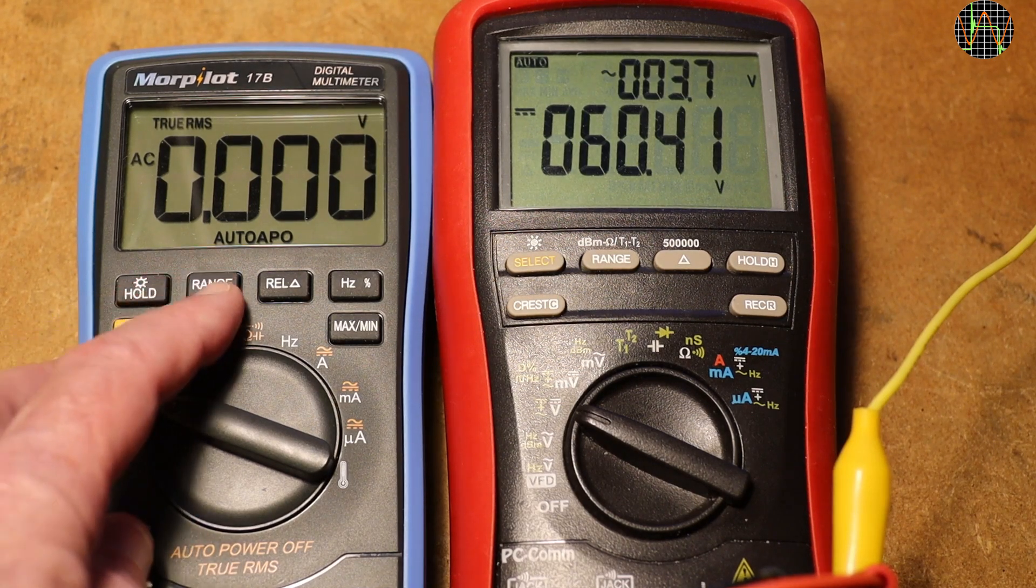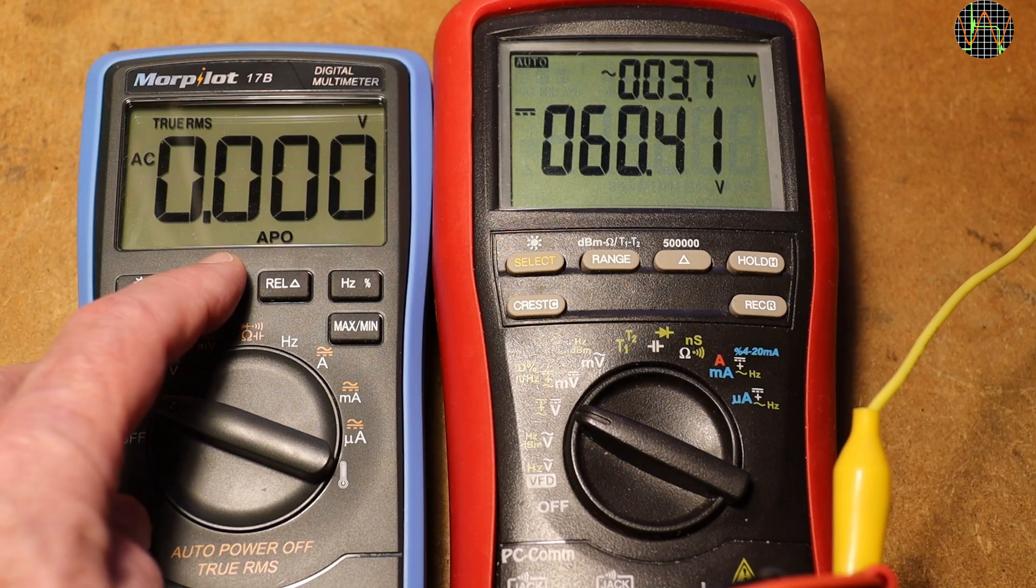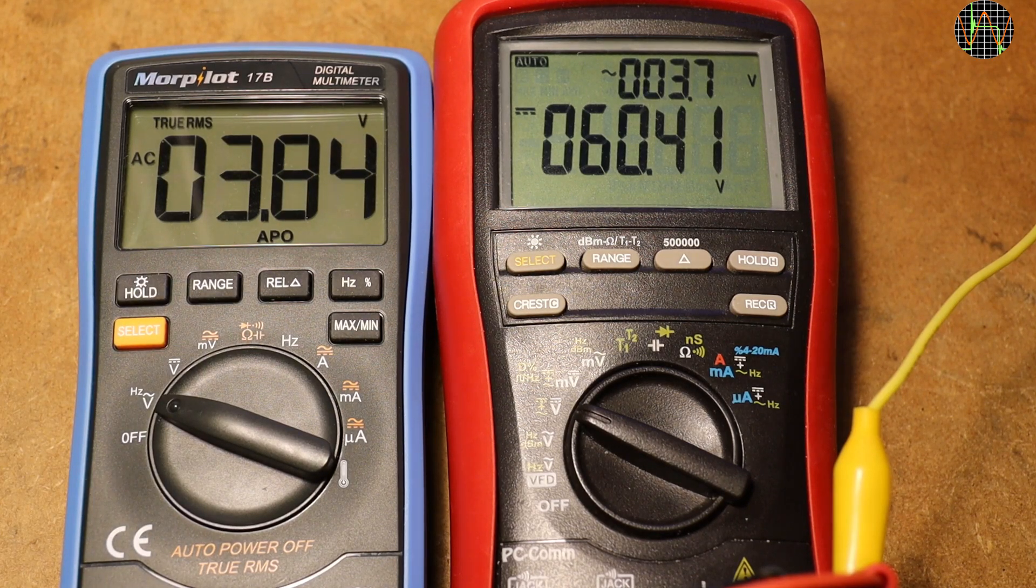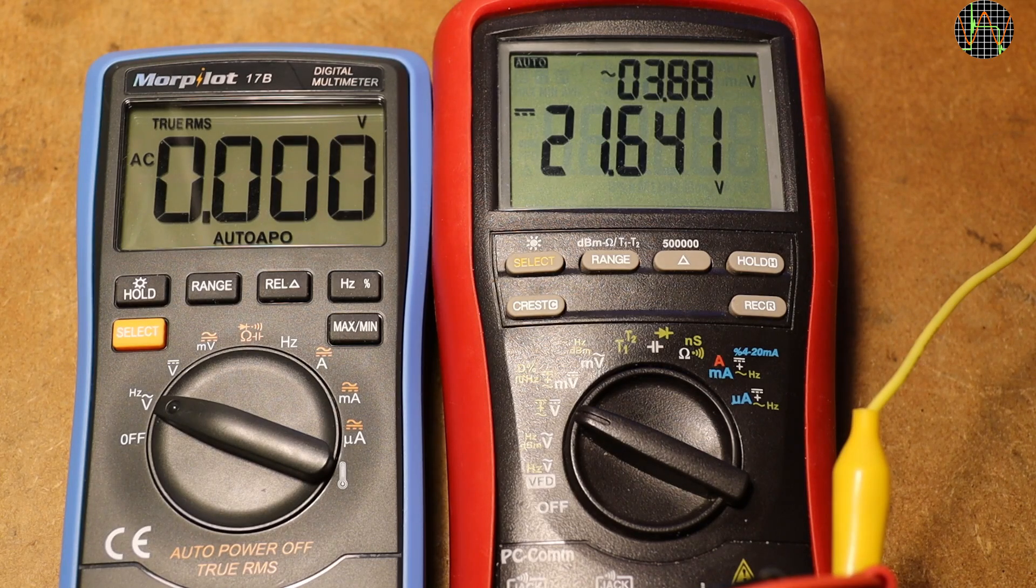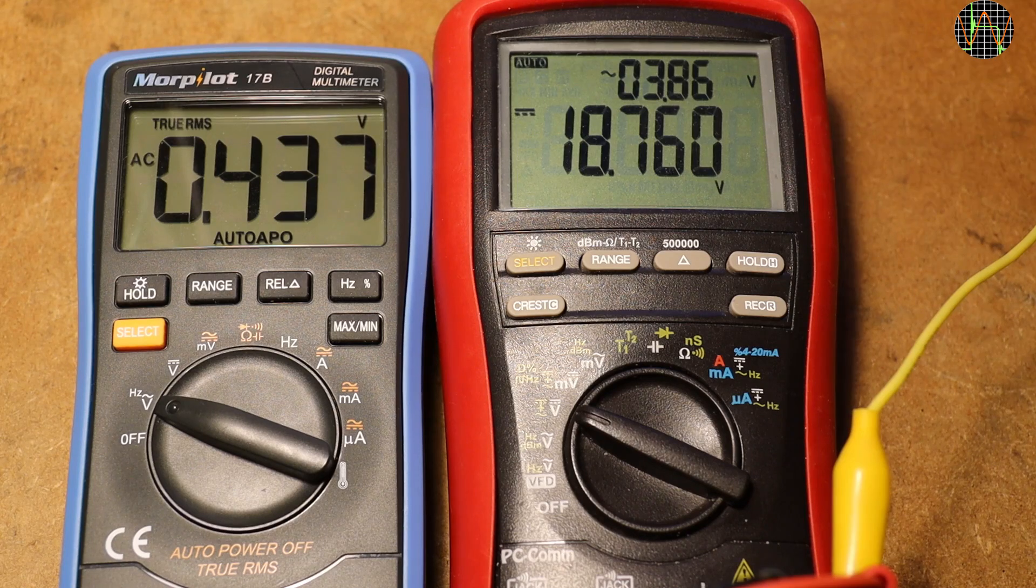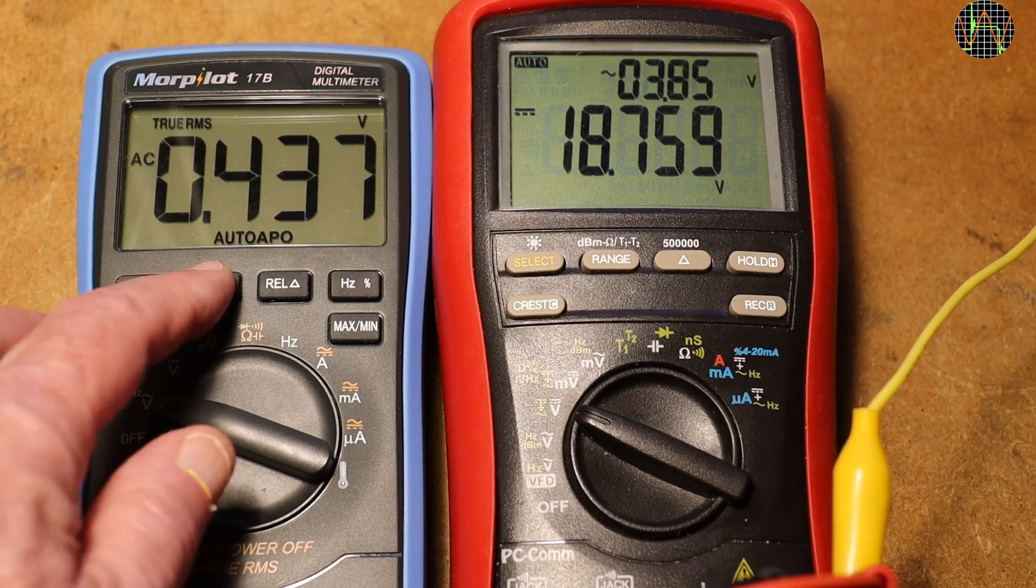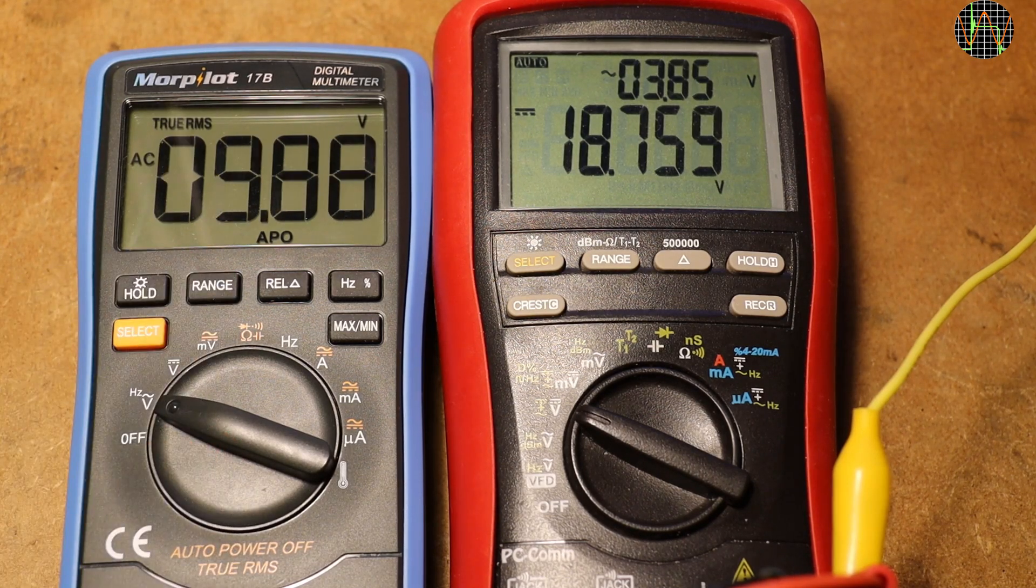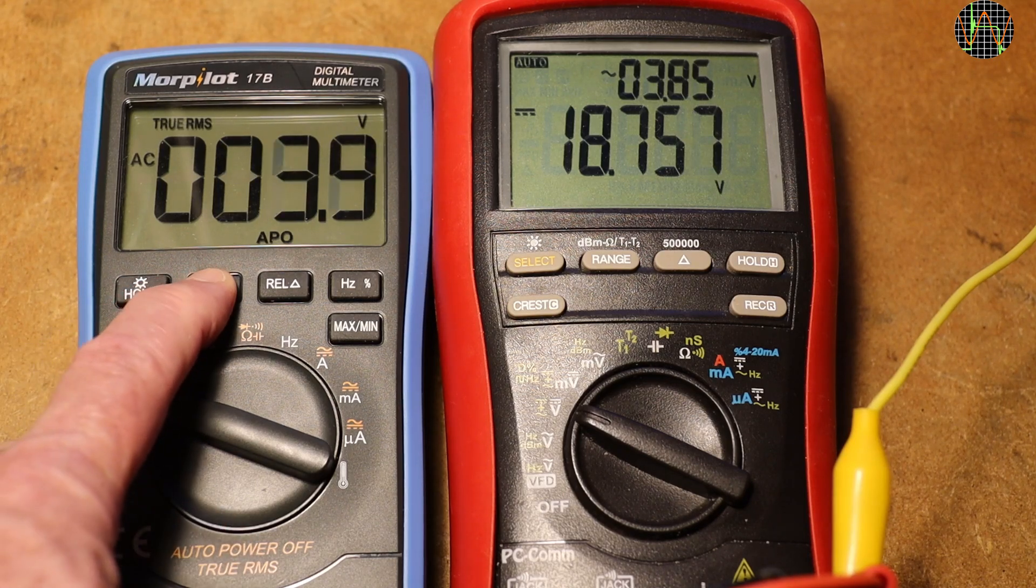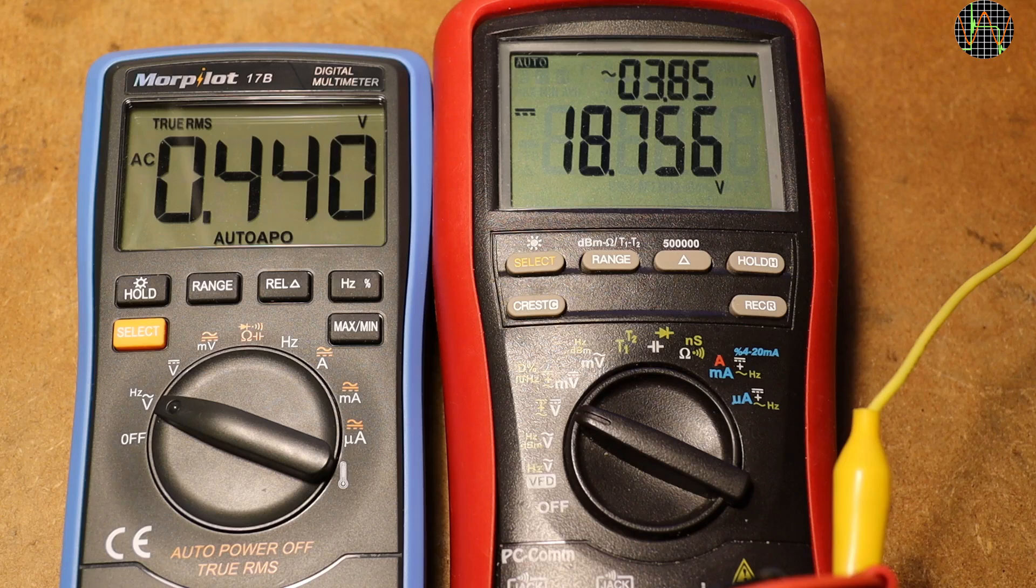In this case even the Morpilot needs manual ranging because as soon as you do that it shows the correct ripple. It also follows the behavior of the Grenova in that if the DC voltage is more moderate, about 21V, the Morpilot starts showing something but it is nonsense as manual ranging confirms. This is a very common problem with lots of multimeters and if mixed AC and DC signals are present or suspected you should always check using manual ranging.